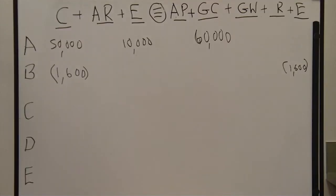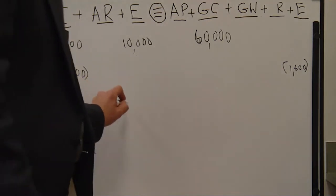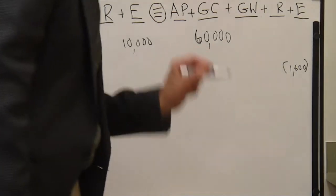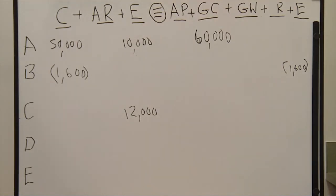In transaction C, the company purchased $12,000 of additional equipment, and they don't have to pay for it for a while. In this case, 30 days. Equipment then, on the left side of the accounting equation, goes up $12,000.